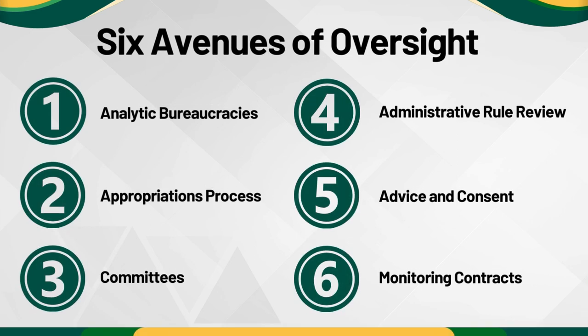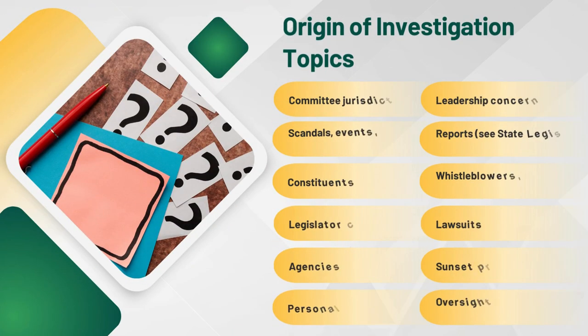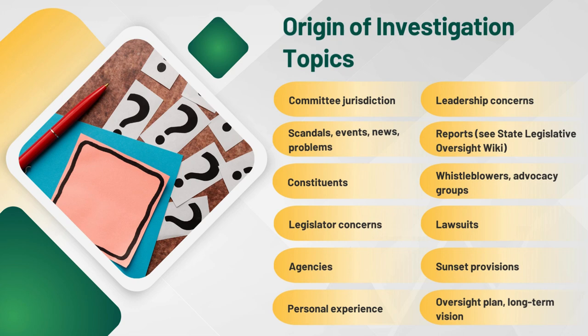Now that we're familiar with the six avenues of state legislative oversight, let's explore where you'll likely find topics in need of oversight. Start by reviewing the routine oversight happening in your assigned committee jurisdiction, or see if your leadership has a priority where oversight might help. Look at the news in your state and across the country — maybe a scandal happening elsewhere reveals a topic worth further inquiry in your state. Visit the SOA wiki for agency performance and fiscal reports to be inspired by how other states approach their oversight efforts. Maybe there's a recent influx of constituent concerns on a topic like applying for unemployment benefits. Also reflect on your own personal experiences with government and where something did not work as intended.